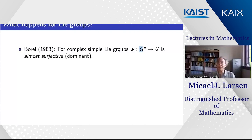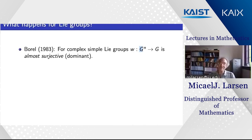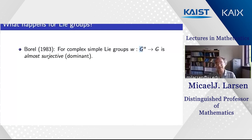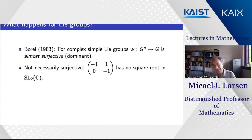When we say the morphism is dominant, we mean almost all elements in G lie in the image: the elements that don't must satisfy an additional polynomial equation, which most elements don't satisfy. From a measure-theoretic point of view, the measure of elements not in the image is zero; topologically, the closure of the non-image is a closed set with no interior. That's what Borel proved.